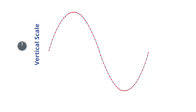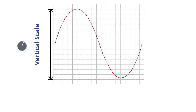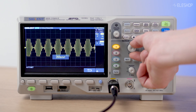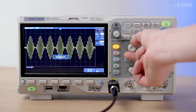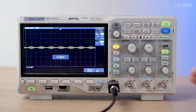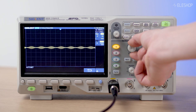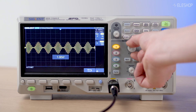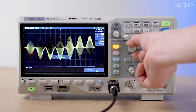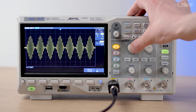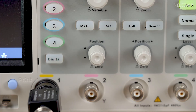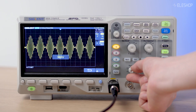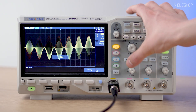First, adjust the vertical scale — volts per division. It controls how much voltage is shown per square on the screen. In this case, we start with a high value, like 5 volts per division, then lower it step by step to zoom in on your signal. This gives you a clearer view of the waveform. For fine tuning, press the knob to switch between coarse and fine adjustment. Watch out for the offset — if an incorrect offset is set on the scope, it might be hard to find the signal. Offset can be reset to zero by pressing the position knob.